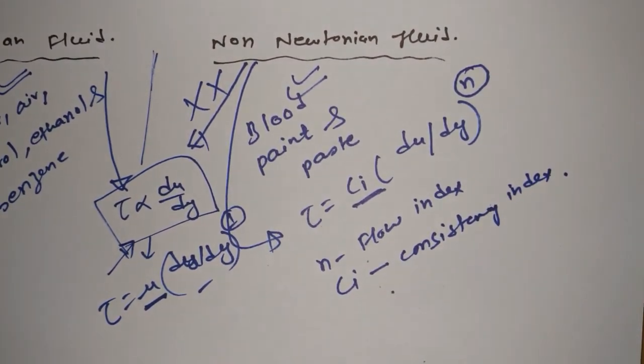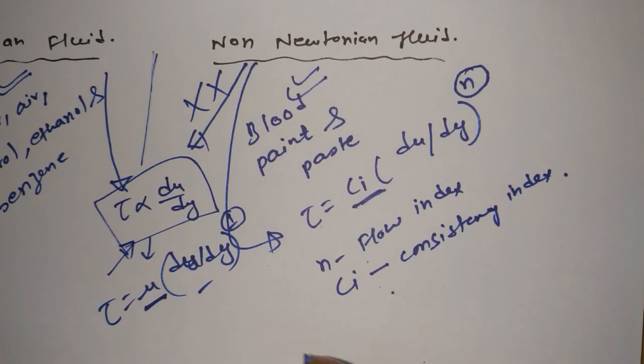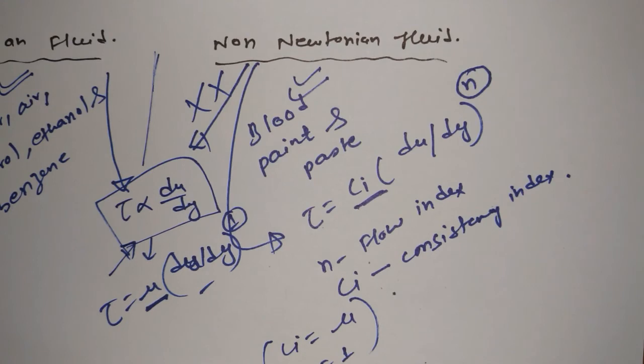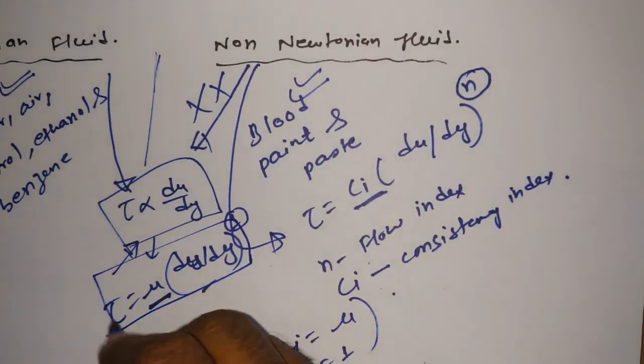Now, when non-Newtonian fluid will be called as Newtonian fluid, when Ci is equal to mu and n is equal to 1, then that fluid is known as Newtonian fluid. Again, that means it will obey this relation.